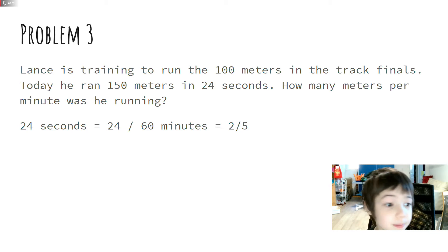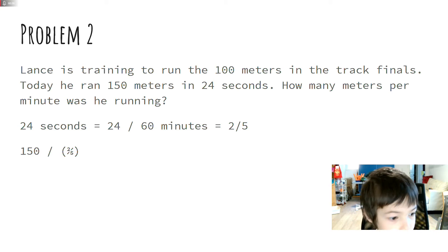Wait, hang on. In 24 seconds, 150 meters in 24 seconds. 24 equals 24 divided by 60, which is 60 seconds in a minute. And that equals 2 over 5, because a minute is 2 over 5. And then 24 seconds is 2 over 5 of a minute.